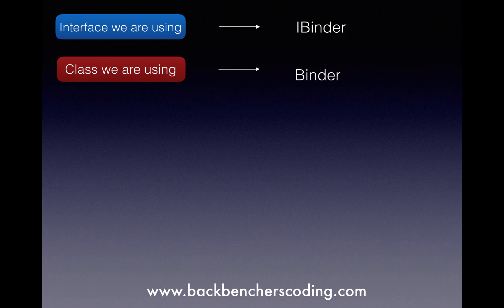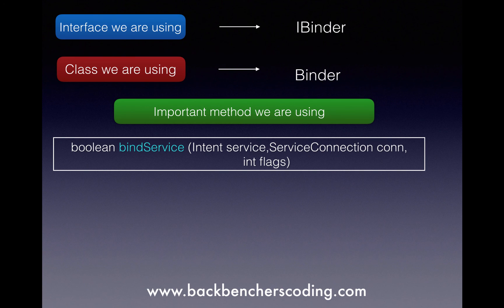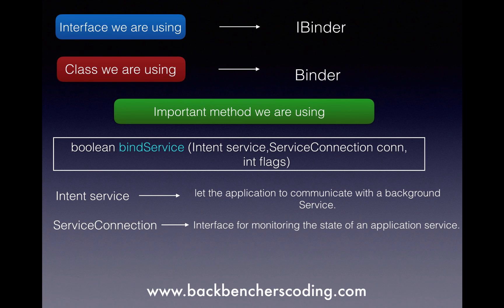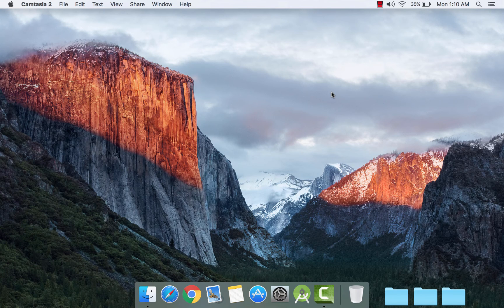Now let us look at the bindService method, which takes three arguments. First is Intent, which lets the application communicate with the background service. Second is ServiceConnection, an interface for monitoring the state of an application service using onServiceConnected and onServiceDisconnected. The last argument is flags, where we pass BIND_AUTO_CREATE so the service binds automatically.